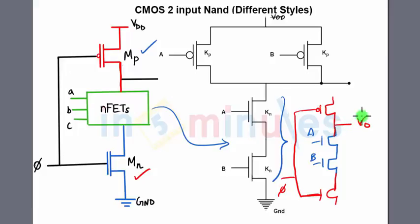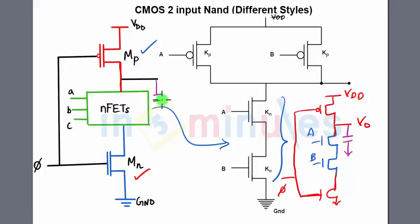The NMOS footer transistor is connected in series with the NFET logic, and the PMOS header transistor is connected to the top of the pull-down logic. This is my Vout, VDD at the top, and ground at the bottom — this is my two-input NAND gate in dynamic style. Remember, when drawing dynamic style, always represent a capacitor at the output.